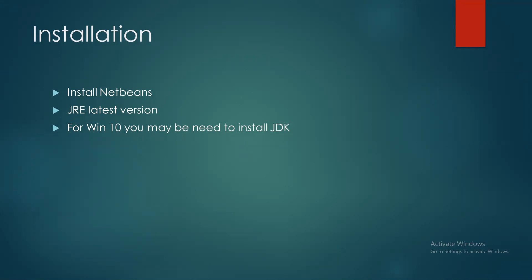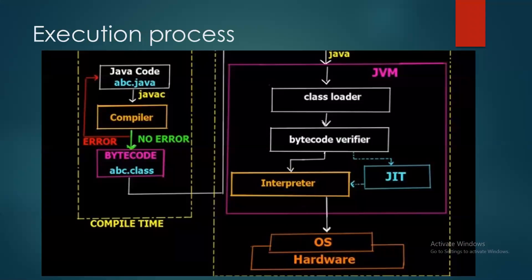آج کے lecture میں سب سے پہلے میں یہ بتاؤں گی کہ کس طرح سے Java کا program execute ہو رہا ہوتا ہے۔ آپ لوگوں کو اتنا idea ہوگا کہ جب بھی کوئی program — C++ کا یا Python کا — اس کو کسی tool پہ execute کرتے ہیں، یعنی ہم program کو compile کرتے ہیں۔ Compiler کا purpose یہ ہوتا ہے کہ وہ errors find out کر کے ہمیں بتا دیتا ہے، پھر ہم errors remove کر کے دوبارہ execute کرتے ہیں۔